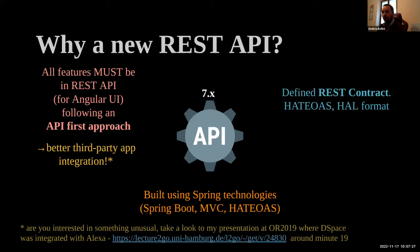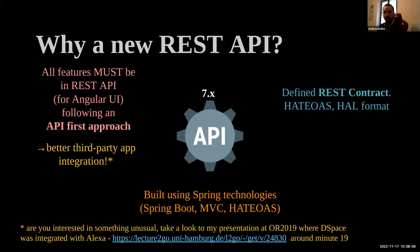The benefit of an API-first approach is that we have the capability for the best third-party API integration. Everything you can do from the user interface can also be done programmatically via the REST API. There is a previous Open Repositories presentation showing different example scenarios where you can use the REST API to integrate DSpace with other systems.